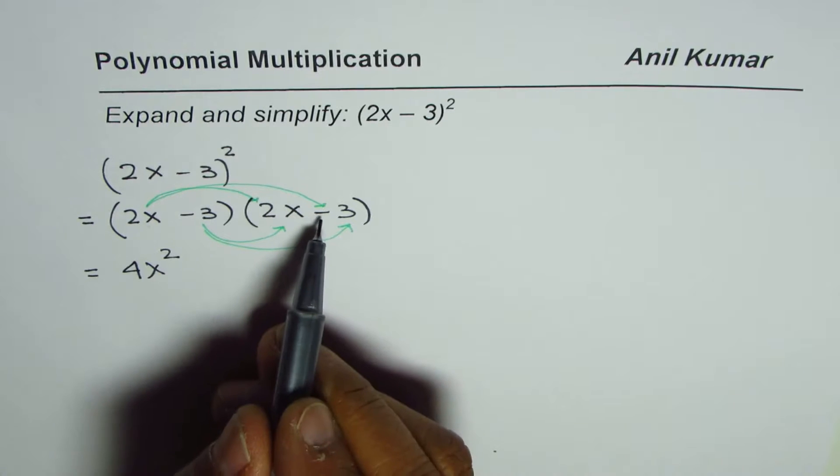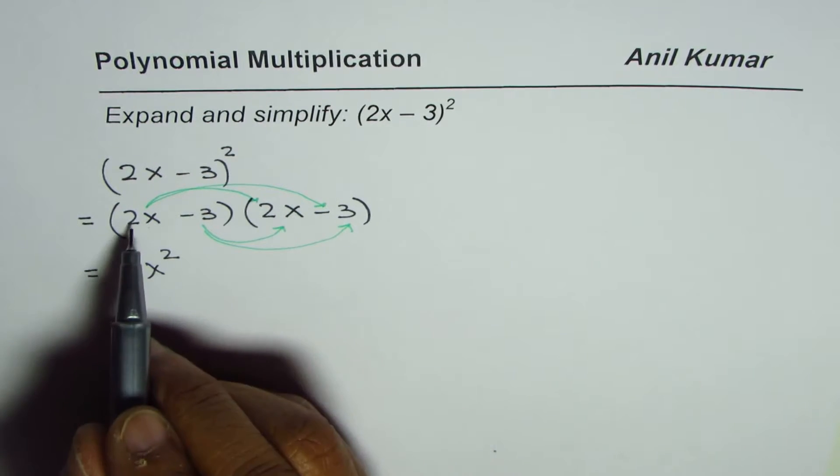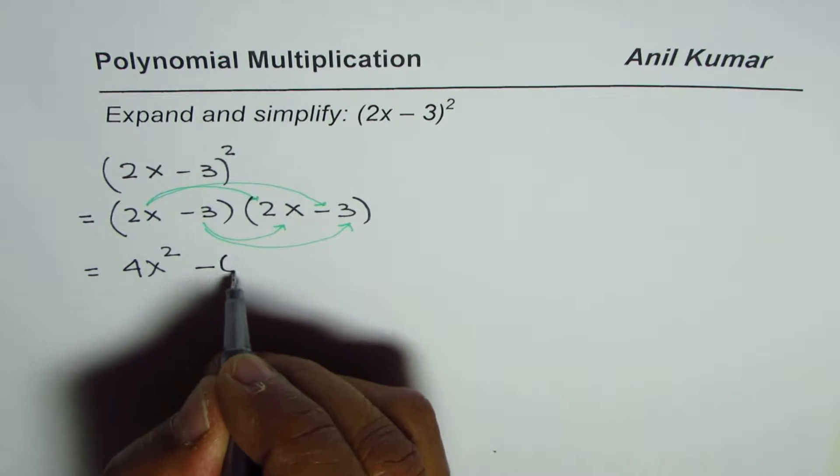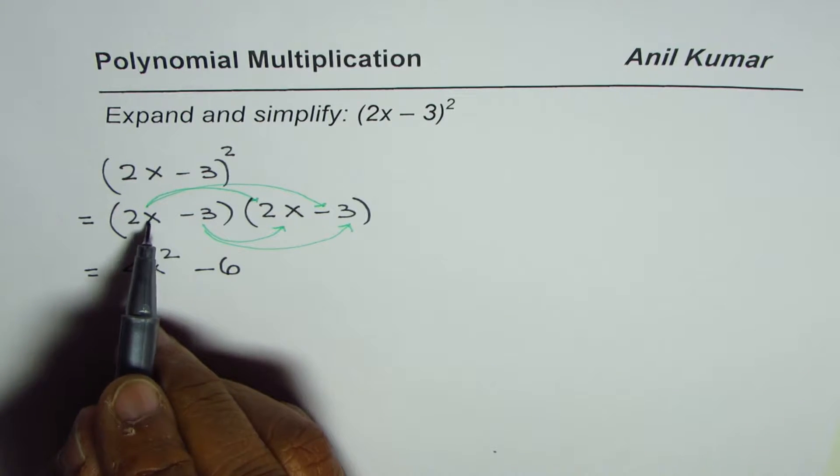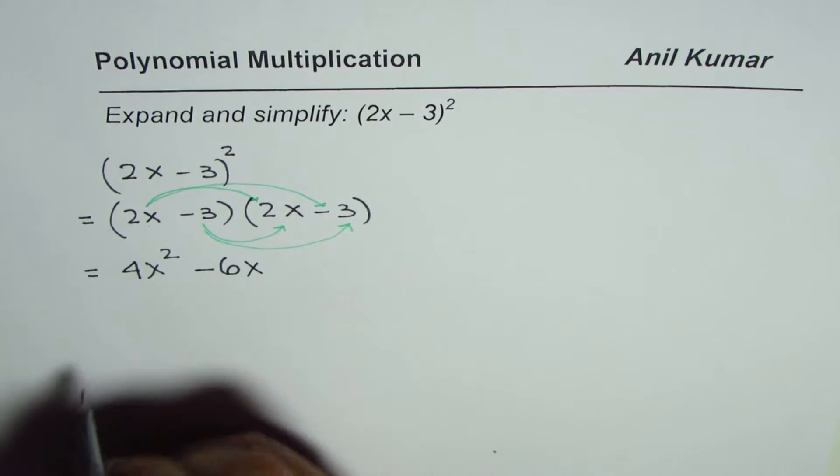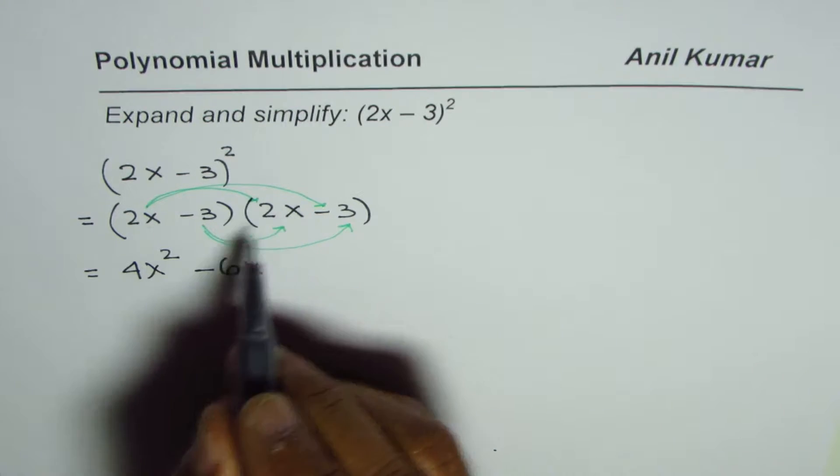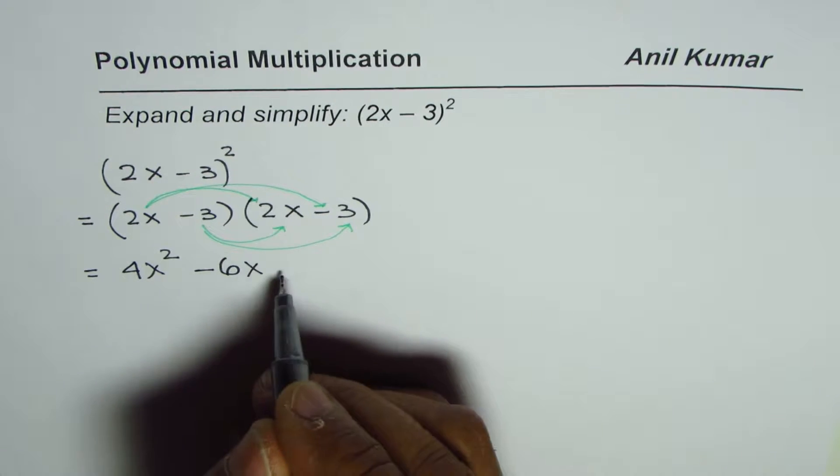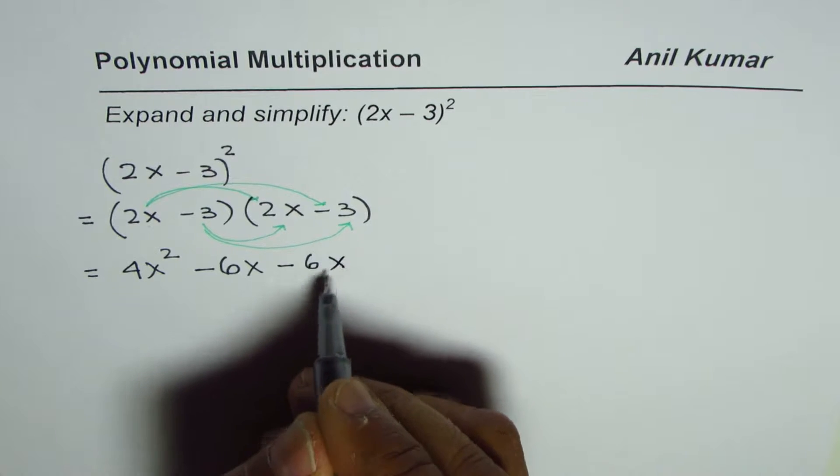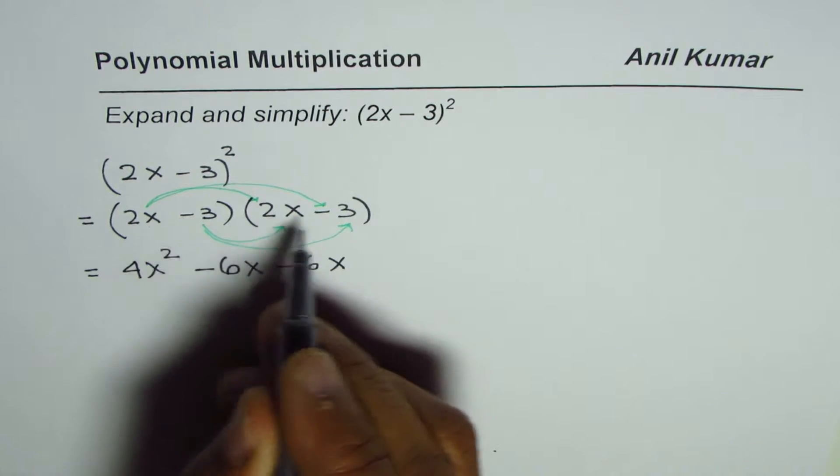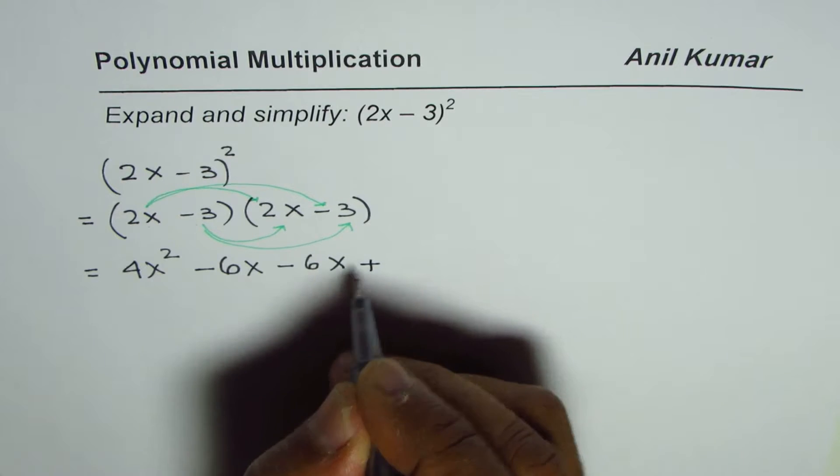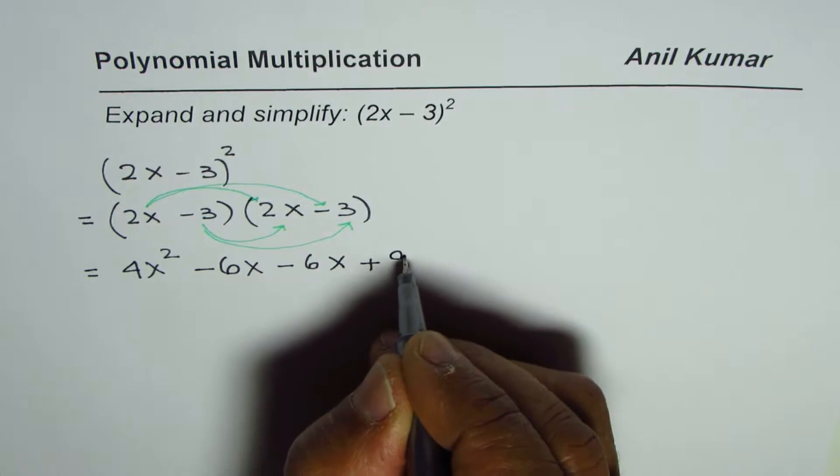Now multiply 2x by -3. -3 times 2 is -6. That is how we get this sign and x itself. Now we'll multiply by -3 times 2x. -3 times 2x will give -6x and -3 times -3, minus and minus is positive. 3 times 3 is 9.